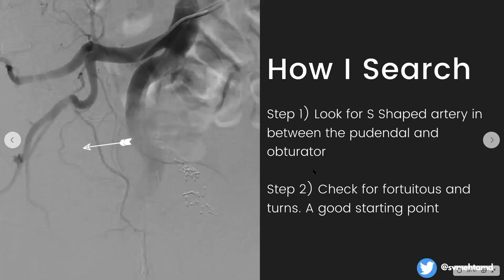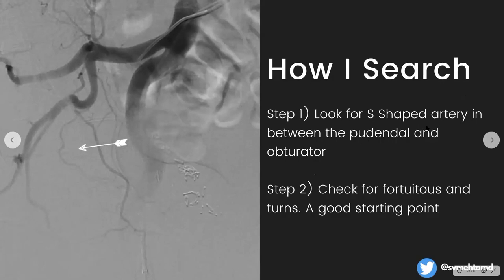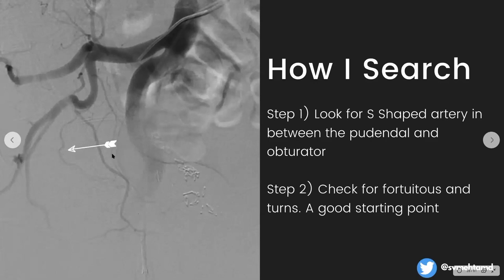Everybody is going to have their own search pattern, but here's how I learned to search. The first thing I look for is an S-shaped artery between the pudendal and the obturator. I check for tortuosity and turns, because that's typically a good starting point. To recap: superior glute, inferior glute, pudendal, obturator — and I'm looking for an S-shaped artery in between. That S-shaped artery between the pudendal and obturator is my starting point.